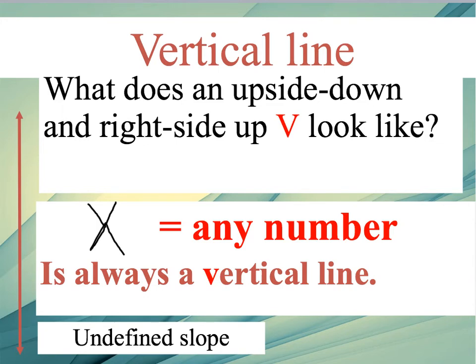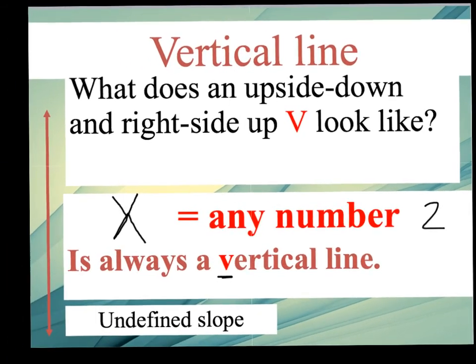And when X equals any number, so think of any number X could be, let's say that X is two. If X equals two, it is always a vertical, and there's the V, always a vertical line.